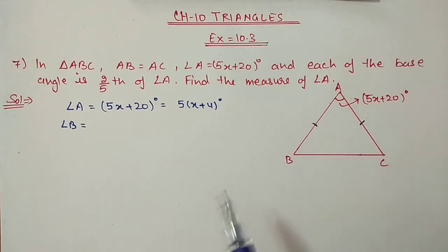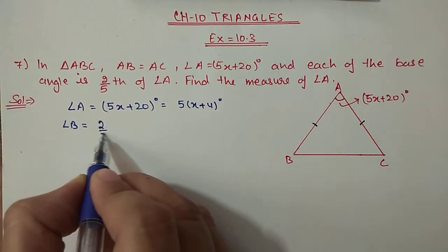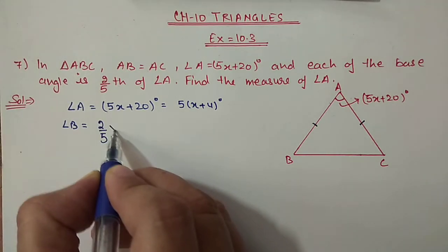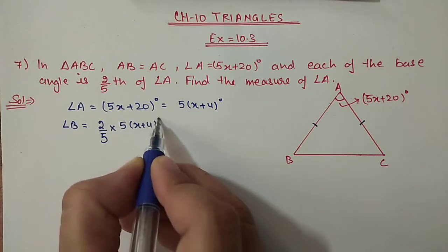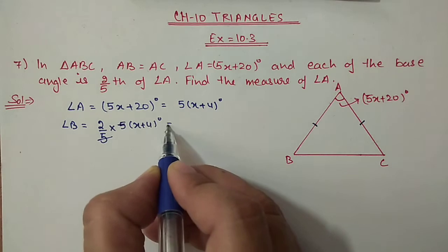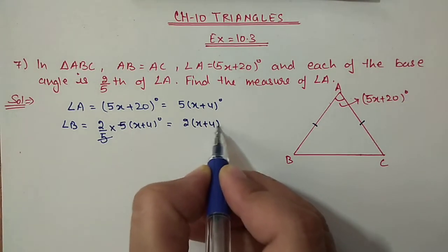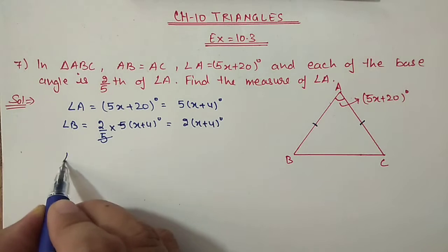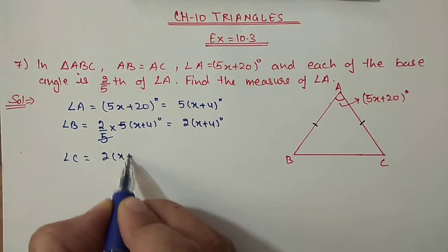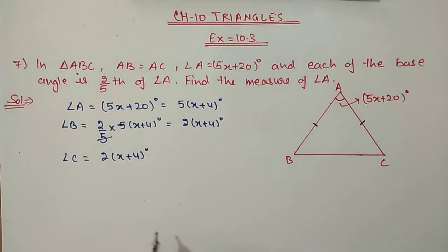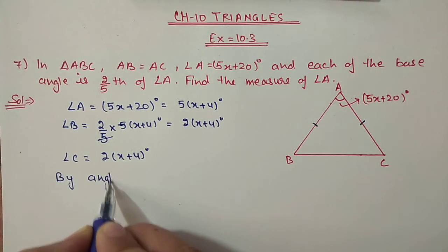First we will find out the base angles. It is given as 2/5 of angle A, hence 2/5 of (5x + 20). You can cancel out 5 with 5, and you will get 2x plus 4 degrees. Angle C is also the same: 2x plus 4 degrees. Now we can use the angle sum property here.